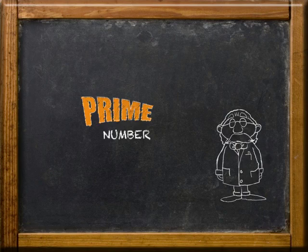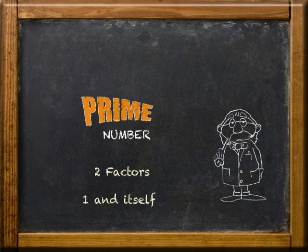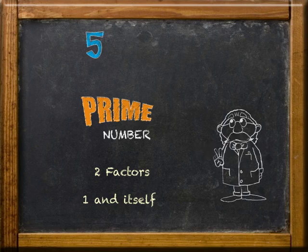If you recall, a prime number is a counting number that has exactly two factors, one and itself. An example is the number 5. It has two factors.